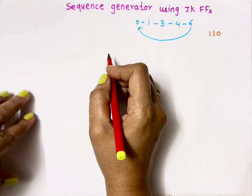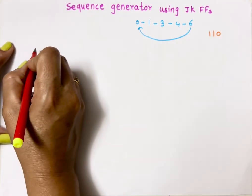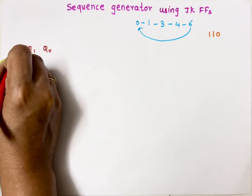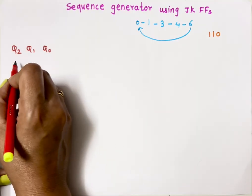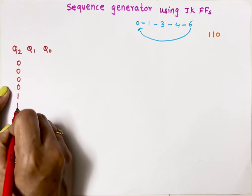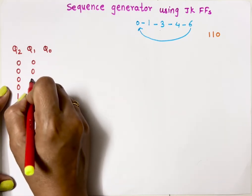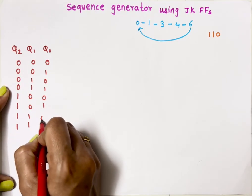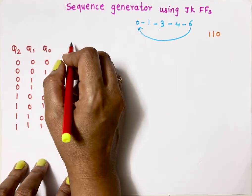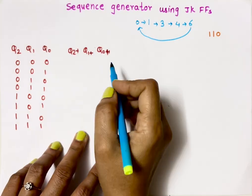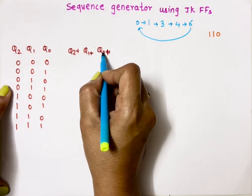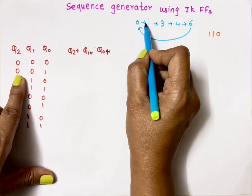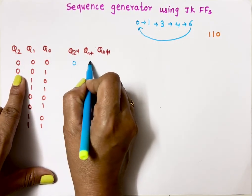Let's write the truth table for this sequence. I need 3 flip-flops, so their outputs are Q0 (LSB), Q1, and Q2. These are the present states. The next states are represented as Q0+, Q1+, and Q2+. If my present state is 0 (000), then the next state is 1, so I write 001.